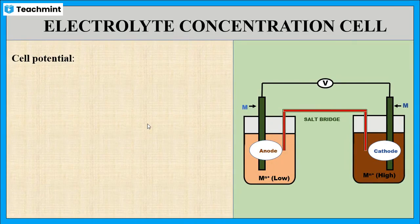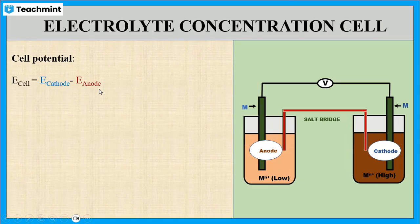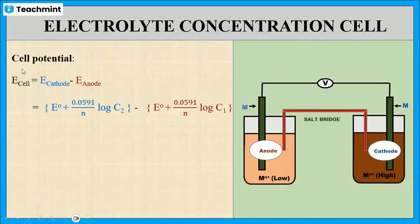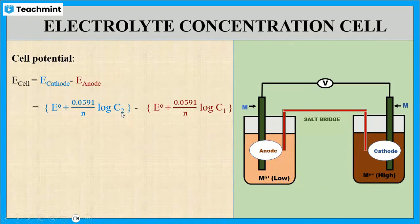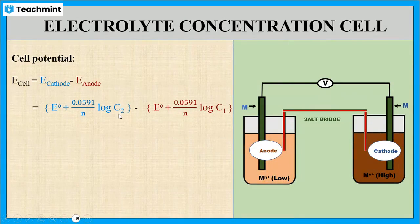Now let us see the cell potential of the concentration cell. We have the formula: E cell = E cathode − E anode. Applying the Nernst equation, this becomes E = E° + (0.0591 / N) × log[M^(N+)]. At the cathode, we use the high concentration C2, so E cathode = E° + (0.0591 / N) × log C2.